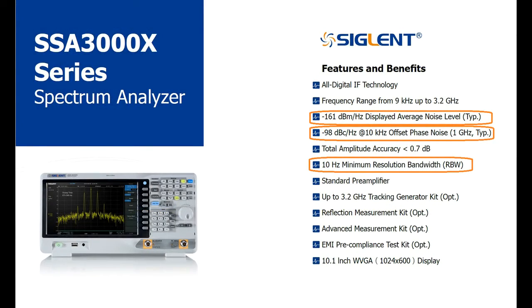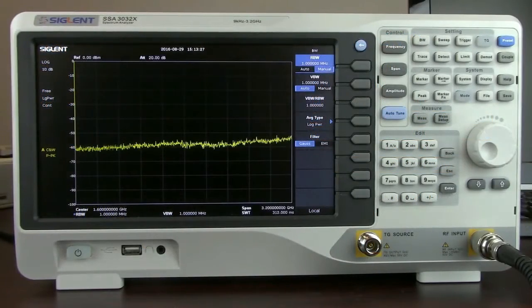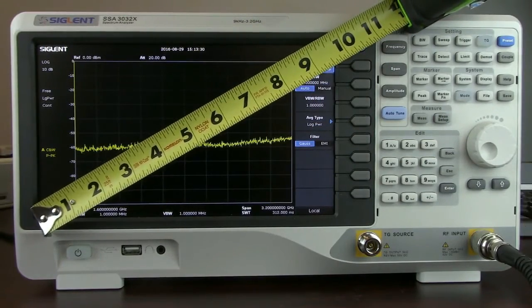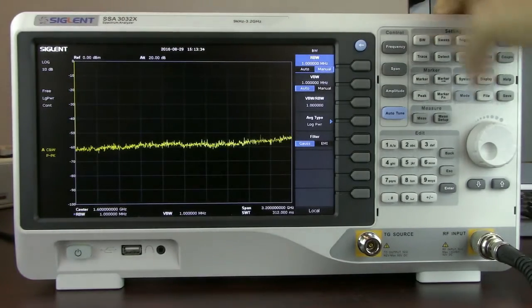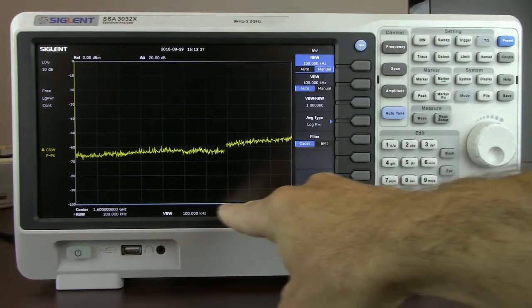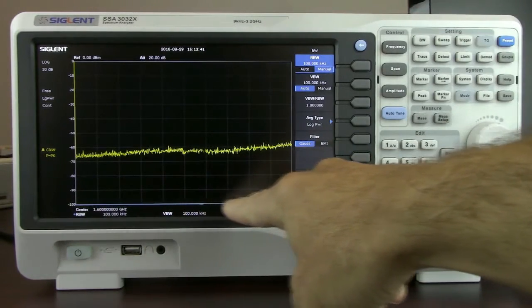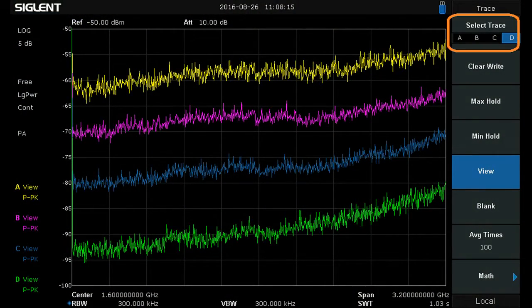The SSA 3000X also features a 10 inch WVGA display and it does measure a full 10.1 inches with about 7 inches of actual trace area. When you slow down the resolution bandwidth and the sweep you'll see there's a progress bar that helps indicate exactly where you are located in the frequency space. The instrument also features the ability to show up to four traces simultaneously.